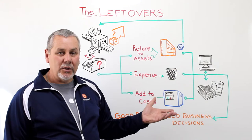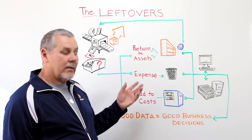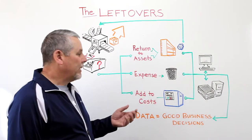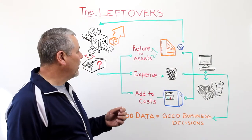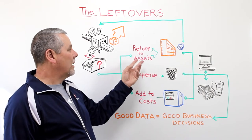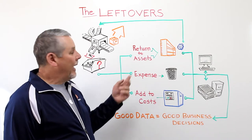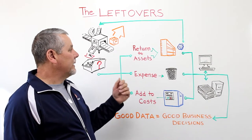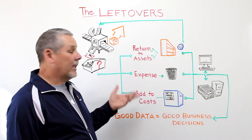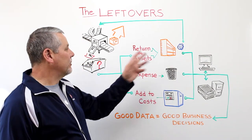With an inventory solution like Fishbowl Manufacturing, we optimize this process and make it a lot easier because we integrate seamlessly with QuickBooks. To return something to assets, you simply barcode that item, or scrap, or whatever it is, and you click the button to return it to assets, and it just is put back on the shelf exactly where you got it — or you may choose to put it in a different location — but it goes back in the inventory.